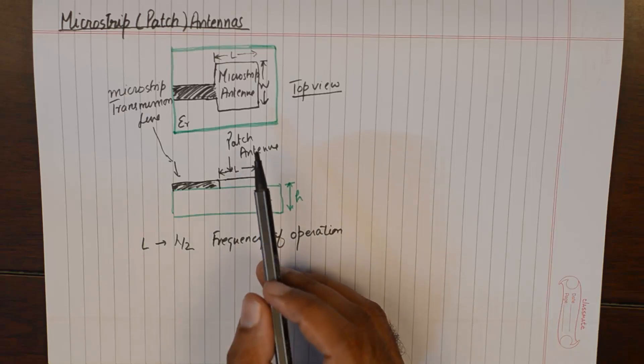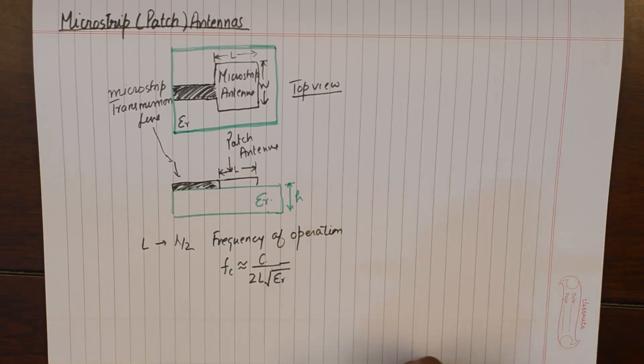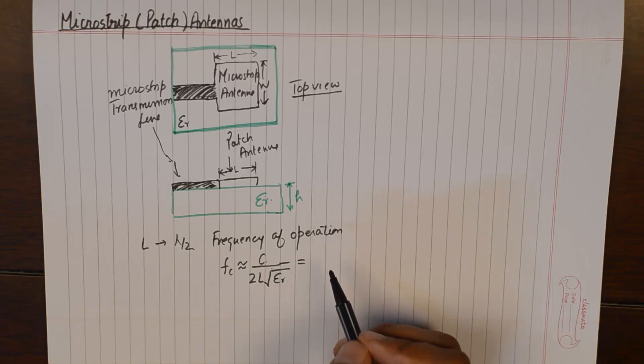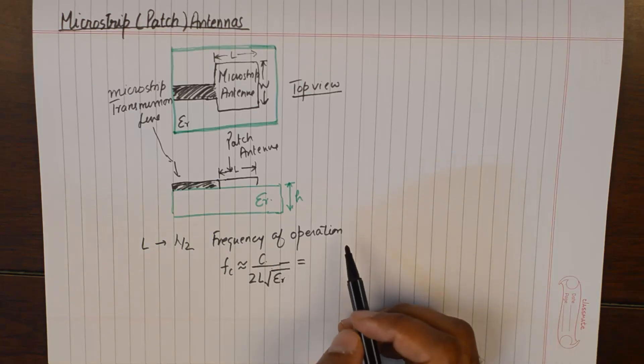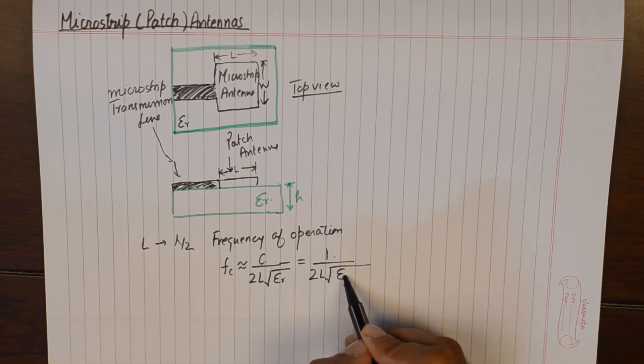This L needs to be equal to lambda by 2 to be able to send a signal of a frequency associated with this wavelength. In other words, if we were to find the frequency of operation of the patch antenna shown in this figure, the mathematical formula would be this.